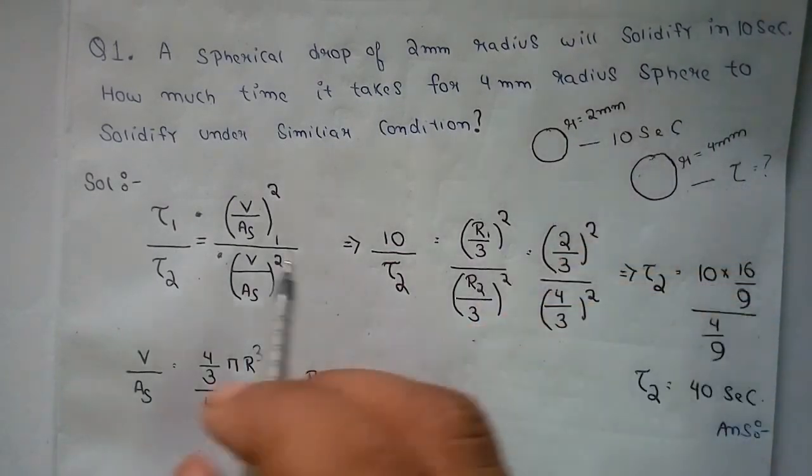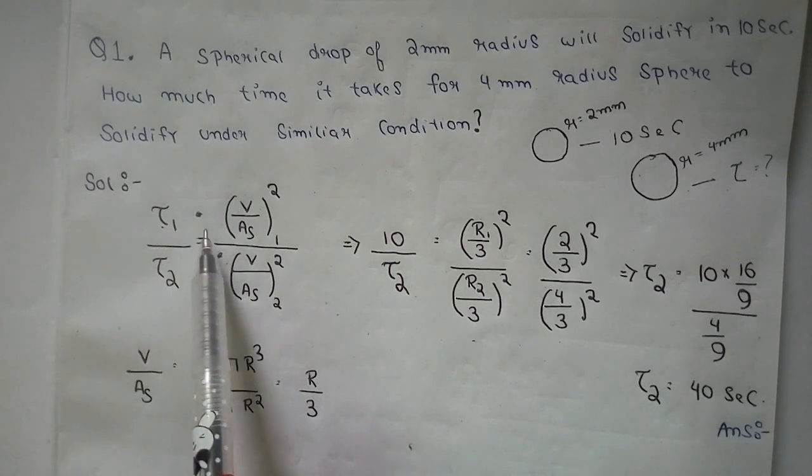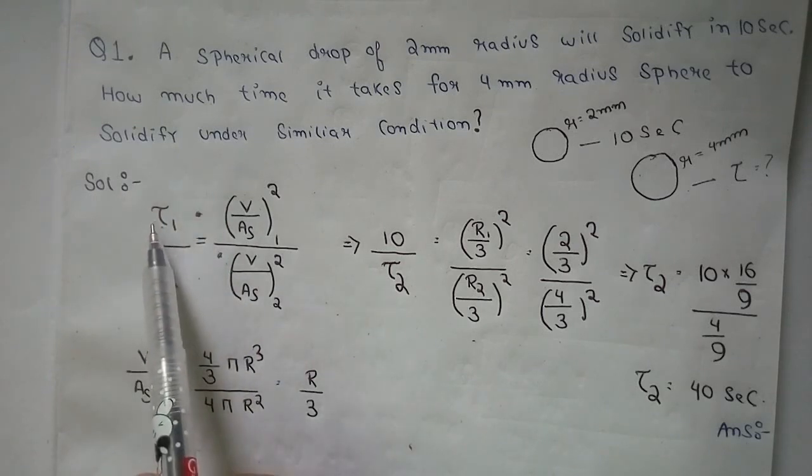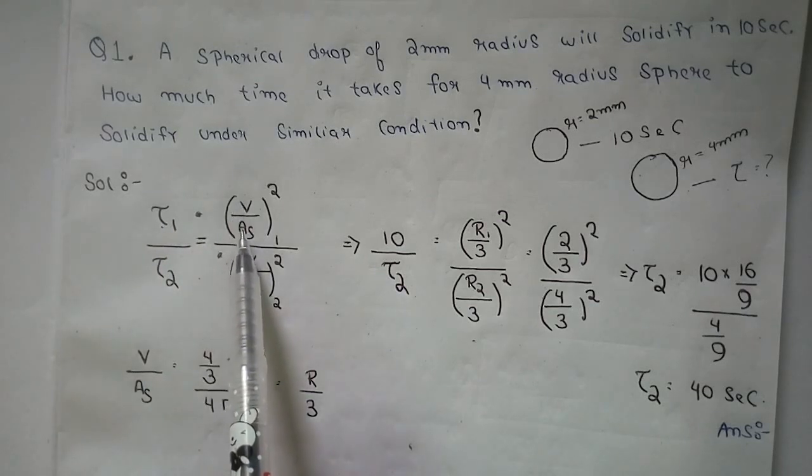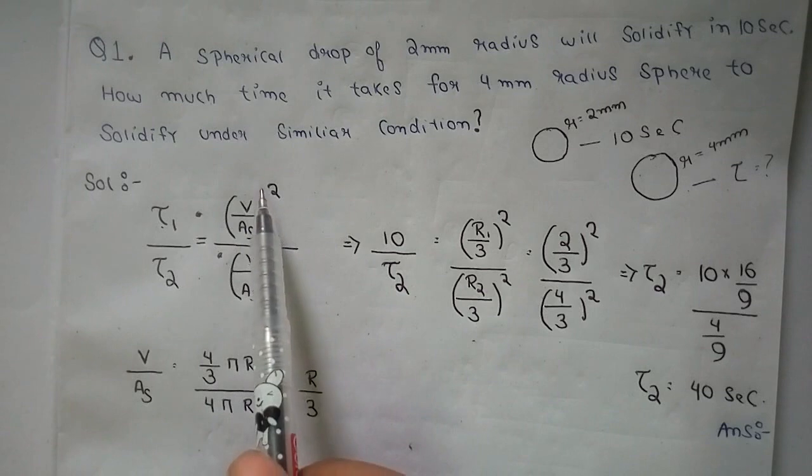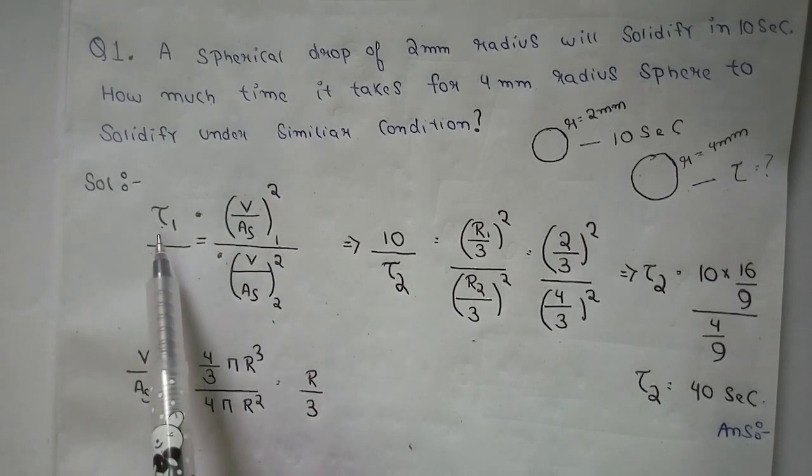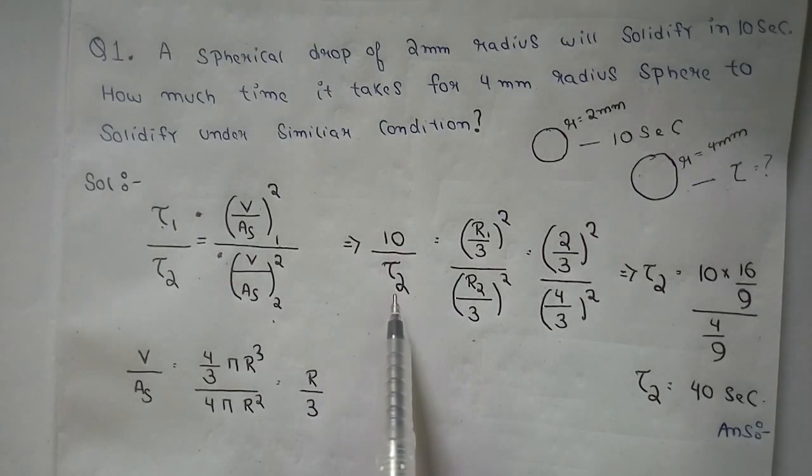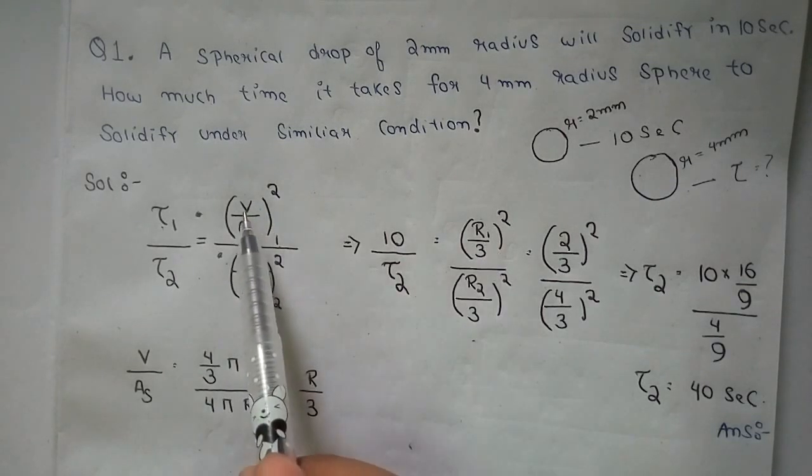We've just seen the solidification time formula: tau 1 equals (V/As)² K. We can directly write the ratio tau 1 by tau 2 equals (V/As)₁² divided by (V/As)₂². We know tau 1 equals 10 seconds and we need to find tau 2.